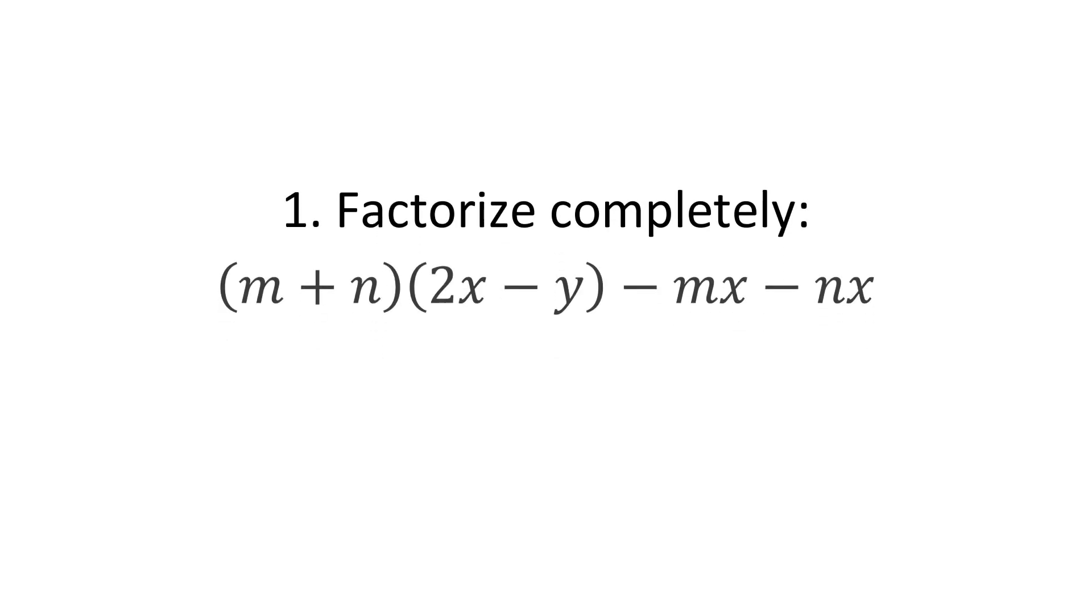The first question: factorize completely this expression. (m + n)(2x - y) - mx - nx. I hope you are getting a few ideas. Let's look at how we solve this. Solution to the question. Let's write the whole expression again.